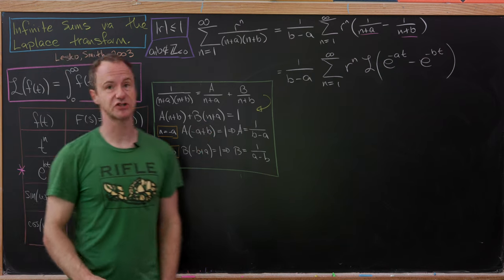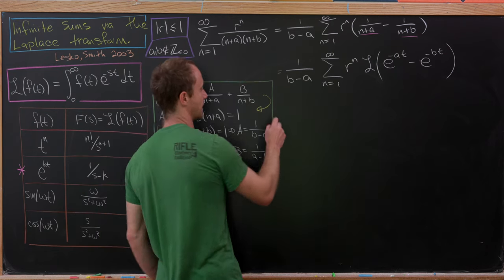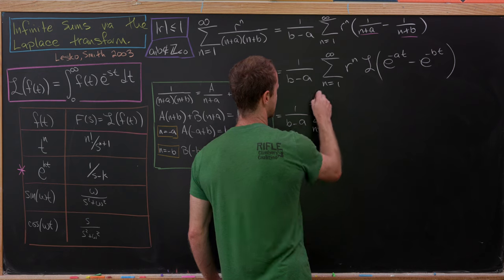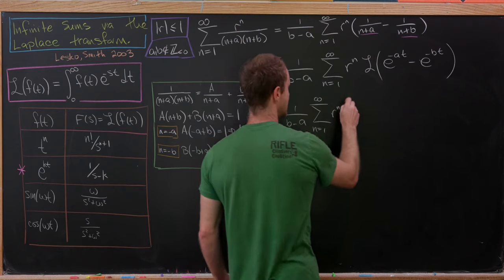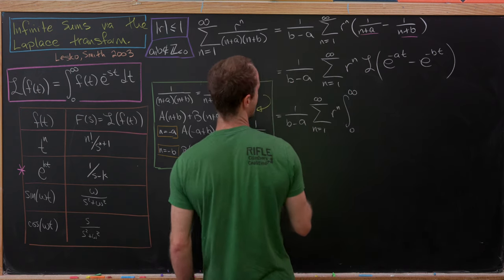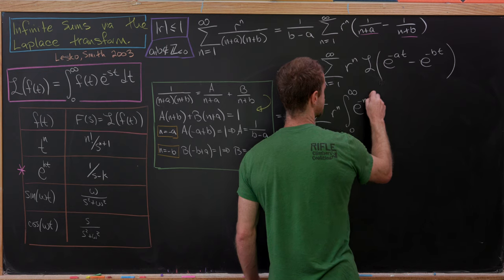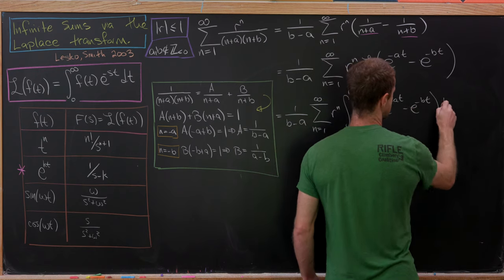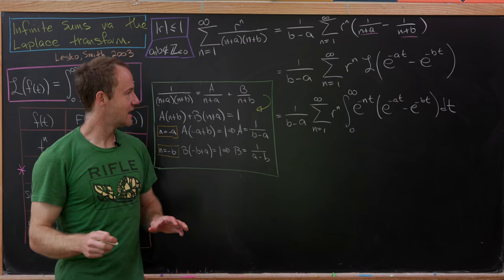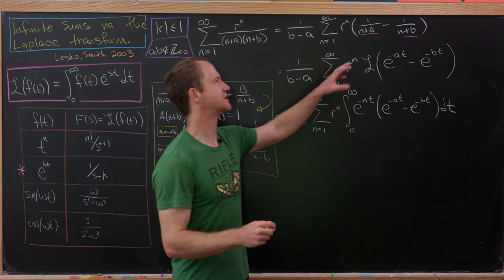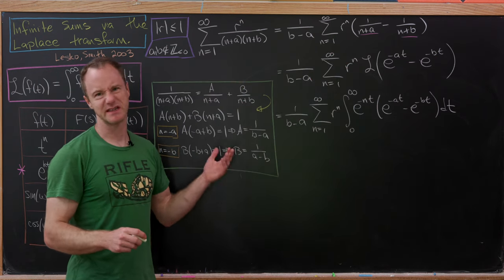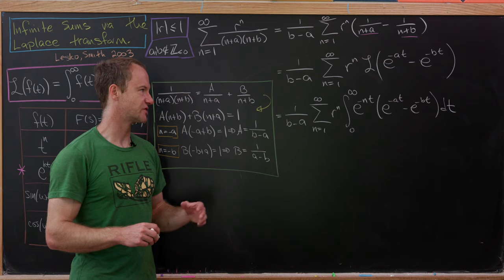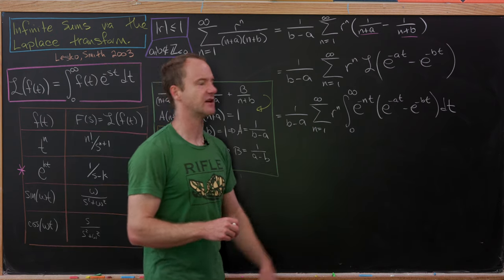Now let's replace the Laplace transform with its definition. We have 1 over (b minus a), then the sum as n goes from 1 to infinity of r to the n, times the integral from 0 to infinity of e to the minus nt times (e to the minus at minus e to the minus bt) dt, where n is the variable for the Laplace transform. We then exchange the order of summation and integration, which is allowed here by the dominated convergence theorem.